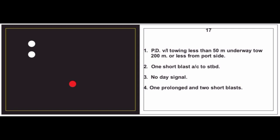Card 17: A power driven vessel towing, less than 50 meters, underway with tow 200 meters or less, seen from port side. Two white lights in vertical line indicate a towing vessel. As per the sidelight from port side, we give one short blast and alter course to starboard. No day signal. Sound signal: one prolonged blast followed by two short blasts.